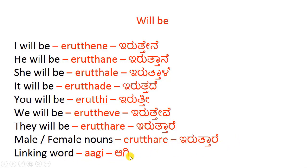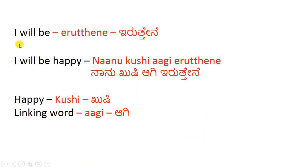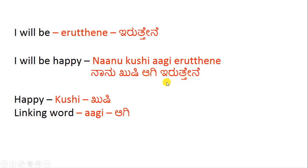The linking word in general is 'agi' and 'ta.' For 'I will be,' iruttene is the suffix used. For example, 'I will be happy' becomes nanu kushi agi iruttene — nanu is 'I,' kushi is 'happy,' agi is the linking word, and iruttene is the suffix.